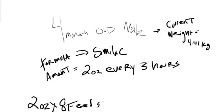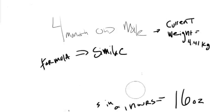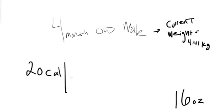Two ounces every three hours is eight feeds in 24 hours, which is 16 ounces. And because it's 20 calories per ounce in the standard formula, you multiply 20 times 16 equals 320 calories.